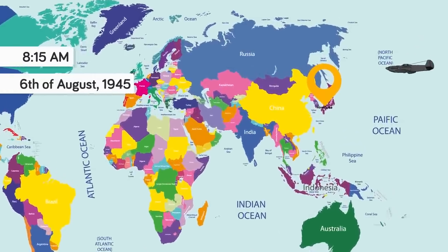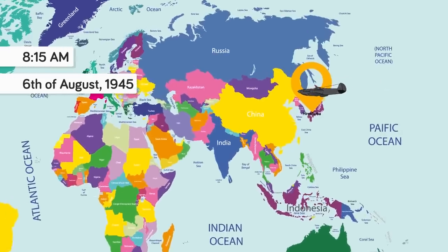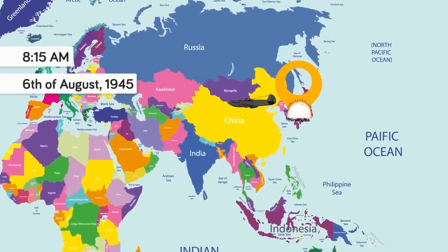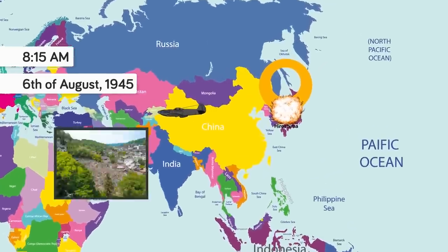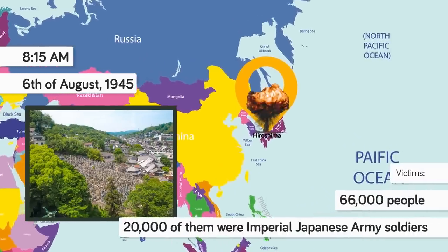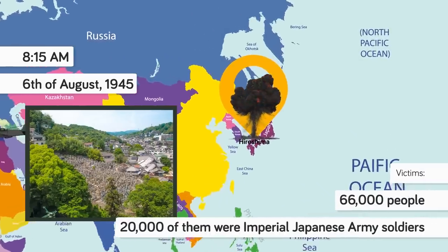41. At 8:15 a.m. on the 6th of August 1945, the Enola Gay dropped the first nuclear weapon ever used in war on Hiroshima, killing 66,000 people, 20,000 of which were Imperial Japanese Army soldiers.